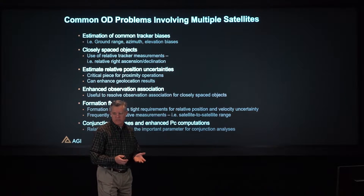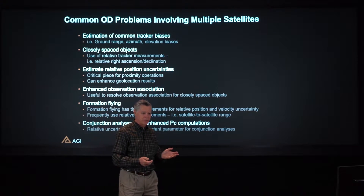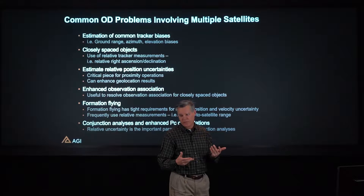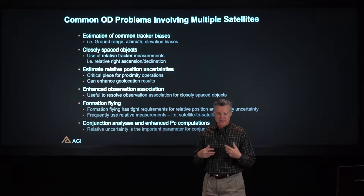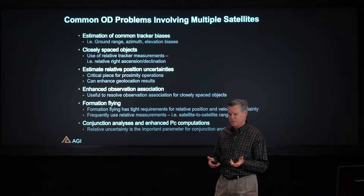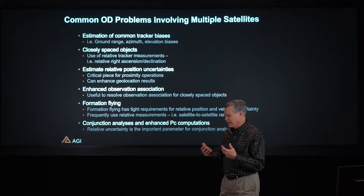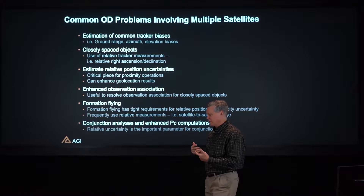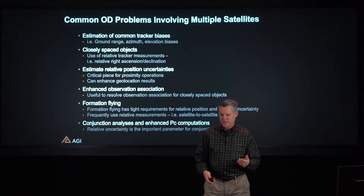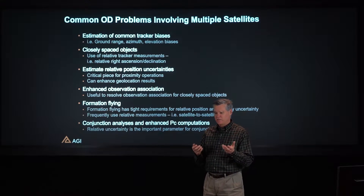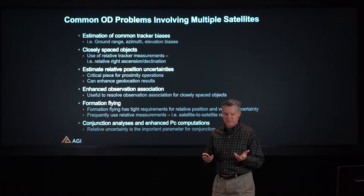There are a number of reasons why you might want to do multi-satellite orbit determination. What I mean by multi-satellite orbit determination is when we process measurements on multiple satellites simultaneously in the same estimator. The advantages of doing this are typically associated with things like estimating common biases between the multiple spacecraft — those common biases can be in the ground system or related to atmospheric effects.